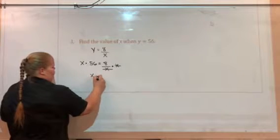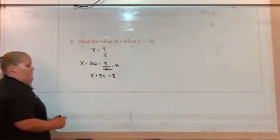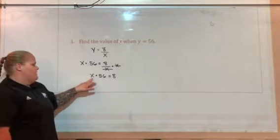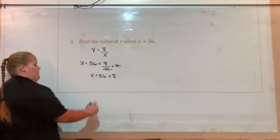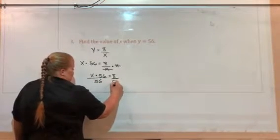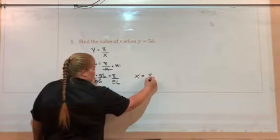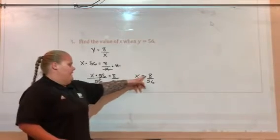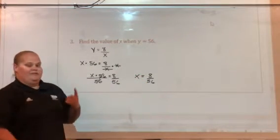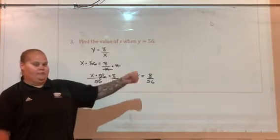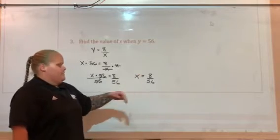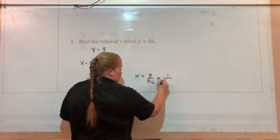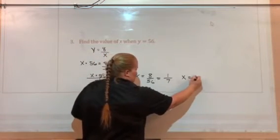So when we do that, these are going to cancel out. And I have x times 56 equals 8. Now this is a much easier problem to work with because I don't have a fraction and x is not in the denominator. Now all I have to worry about is getting rid of this 56 to get x by itself. To get rid of 56, I'm going to divide both sides by 56. And I have x equals 8 over 56. When we give an answer, we want to put it in the simplest form possible. 8 and 56 are both divisible by 8. If I divide 8 by 8, I'm going to get 1. If I divide 56 by 8, I'm going to get 7. So x is going to equal 1 over 7.